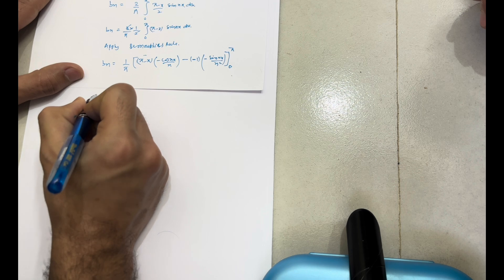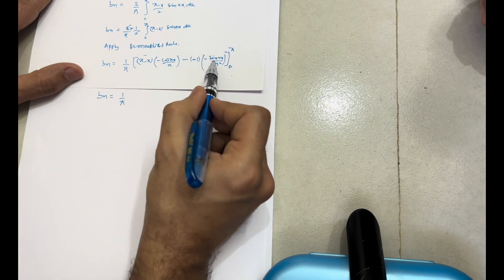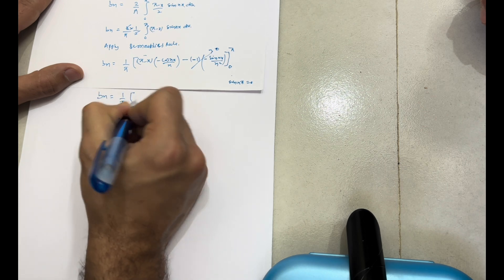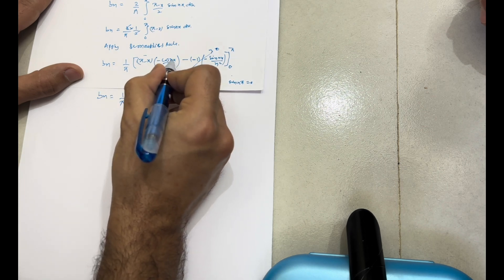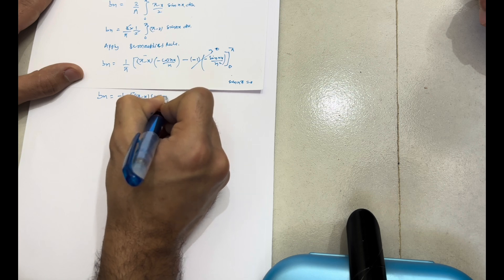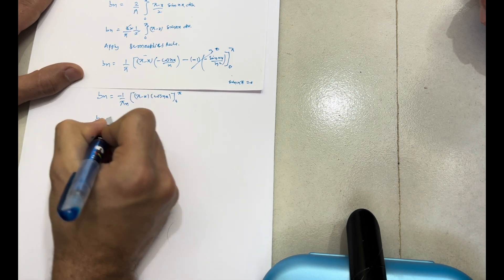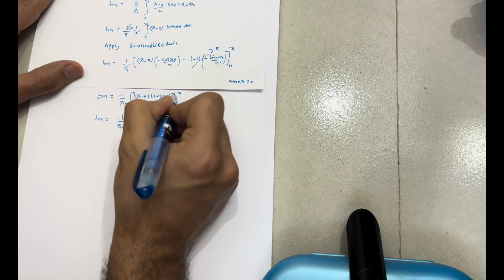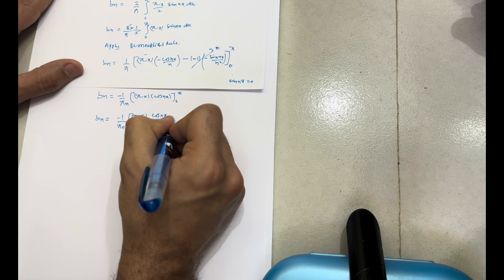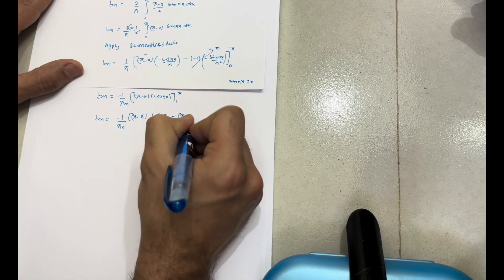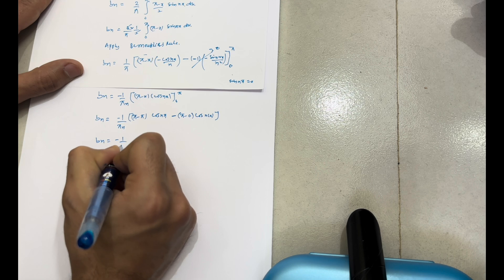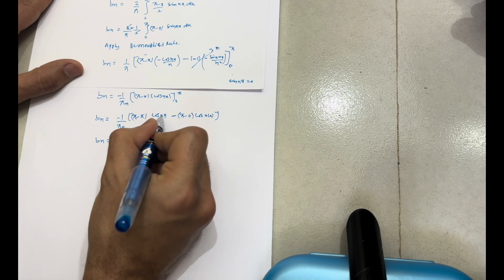Now applying the limits. Since sin(nπ) = 0 always, those terms vanish. We're left with bn = -(1/πn) × [(π - x) cos(nx)] from 0 to π. Applying the upper limit: (π - π) cos(nπ) = 0 × cos(nπ) = 0. Applying the lower limit: (π - 0) cos(0) = π × 1 = π. So bn = -(1/πn)(0 - π).